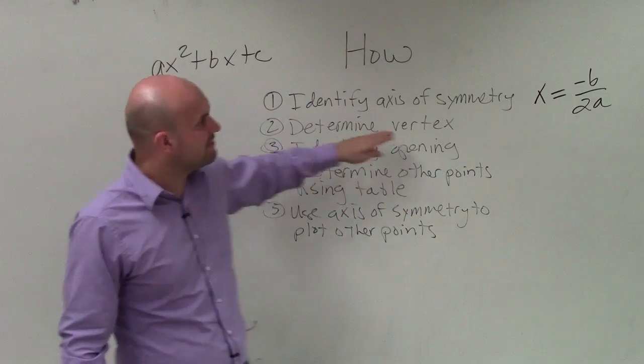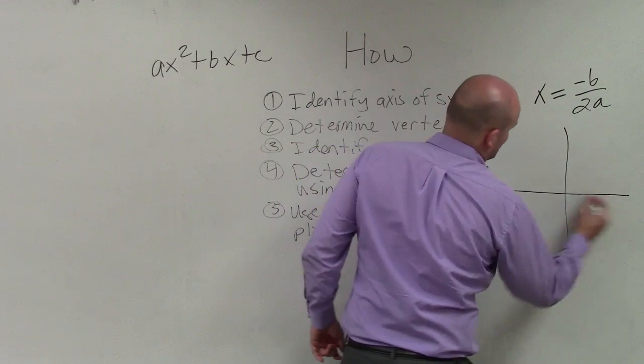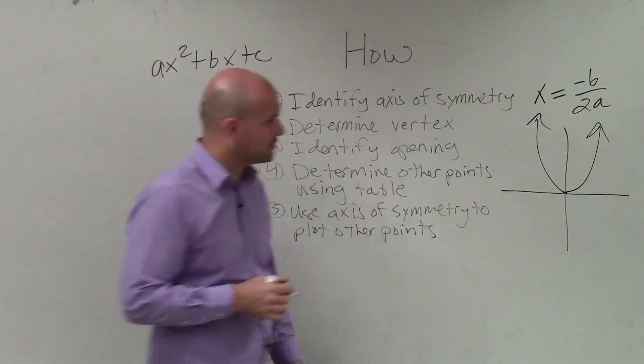Then the next thing to do is determine the vertex of our quadratic, of our parabola, which is made by the quadratic. So remember, here's just the parent graph of the quadratic.